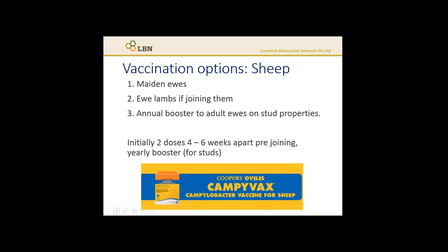For sheep, the vaccination options include vaccinating maiden ewes, vaccinating ewe lambs if you're going to join them, or undertaking an annual booster to adult ewes and ewe lambs on stud properties. However, this is unlikely to be economical in a commercial enterprise. This vaccination protocol is also two doses, four to six weeks apart, pre-joining, and if you have a high-value flock, then a yearly booster as well.